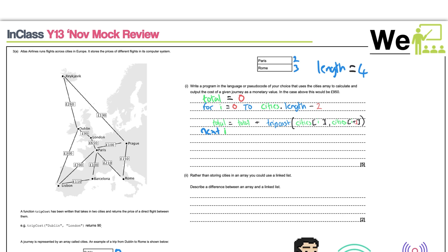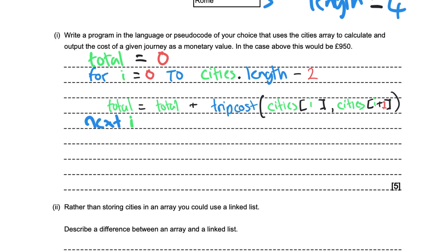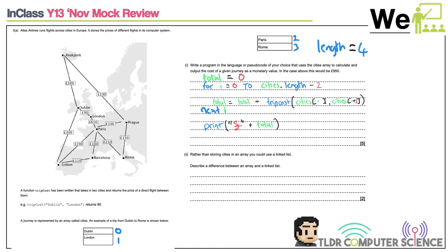For the output, print something like the pound sign concatenated with total to make it a monetary value. The print is outside the for loop — it only runs once when the loop is complete. The pseudocode syntax uses 'next i' to terminate a for loop, though 'end for' makes the scope clear. Small syntax omissions like forgetting 'end if' won't cost many marks, but make sure you're correctly referencing the array.